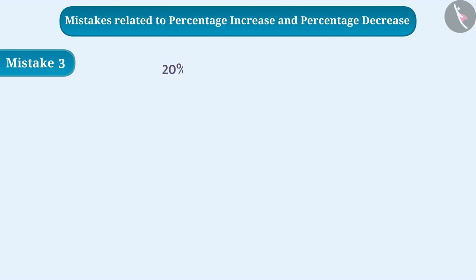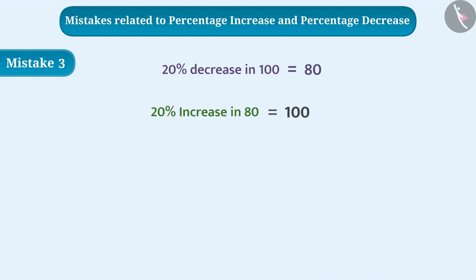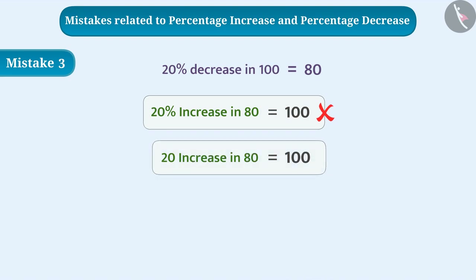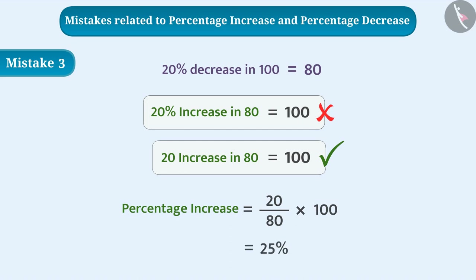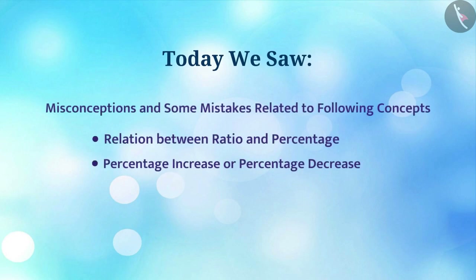Mistake 3: If there is a 20 percent decrease in 100, the result is 80. Children mistakenly think a 20 percent increase will bring 80 back to 100, but this is wrong. To get from 80 to 100, an increase of 20 is needed, but the base is now 80. Therefore, the percentage increase is (20 ÷ 80) × 100 = 25 percent. Today we saw misconceptions and some mistakes related to these concepts.